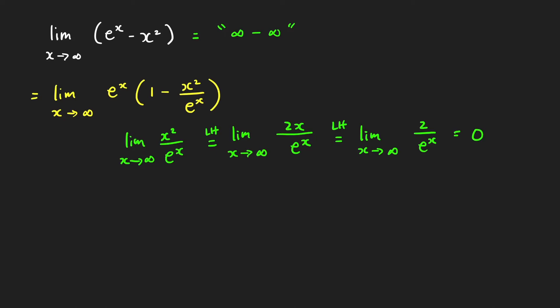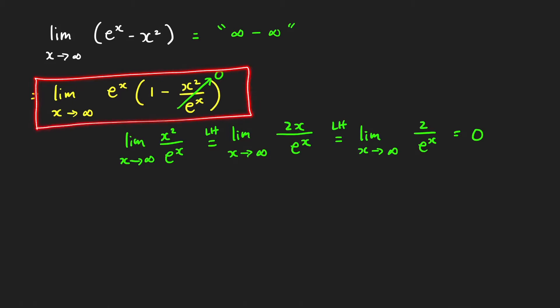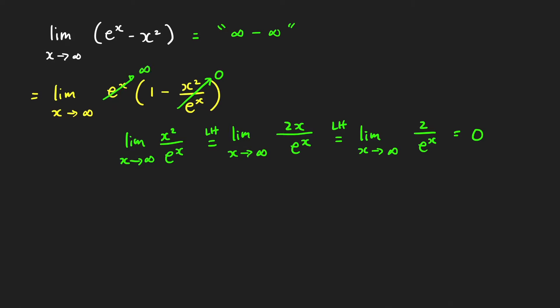So the fraction x²/eˣ approaches 0 as x approaches infinity. Therefore, 1 - x²/eˣ approaches 1. Since eˣ goes to infinity and the second factor goes to 1, the limit is indeed equal to infinity.